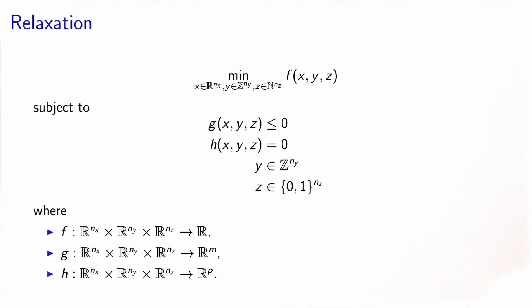It's called a relaxation, and it happens to be very useful. Here is a generic mixed integer optimization problem. We have three sets of variables: x which has real values, y which are integers, and z that are binary. We need to minimize an objective function. We have inequality constraints, equality constraints, and then we have the integrality constraints.